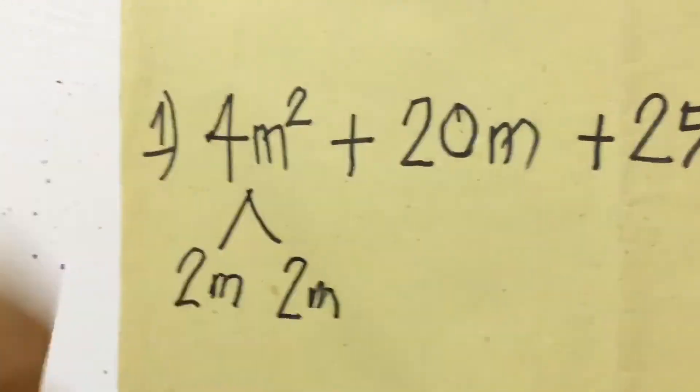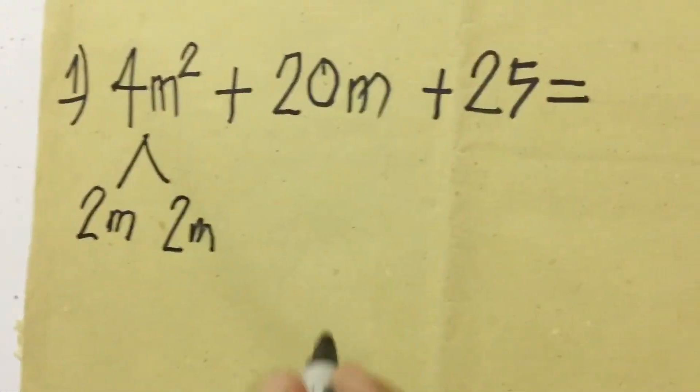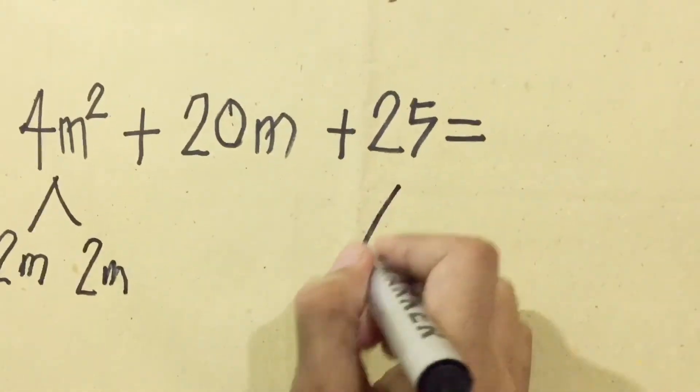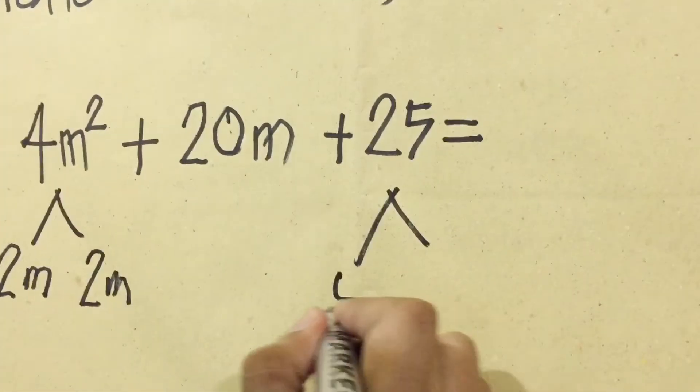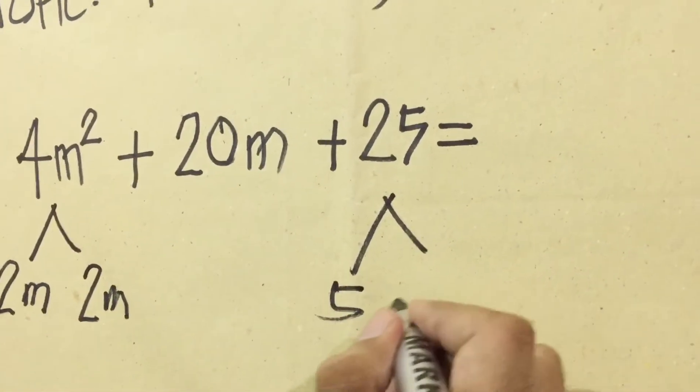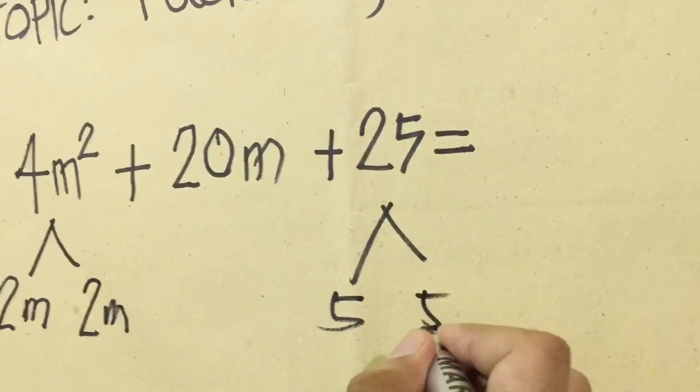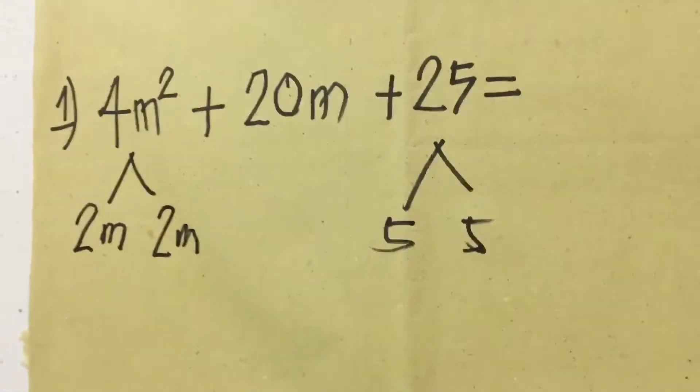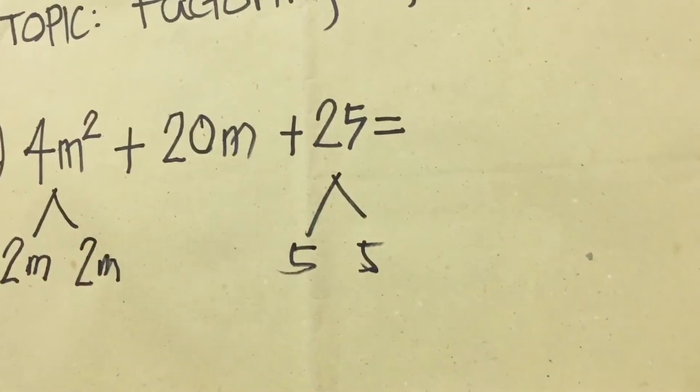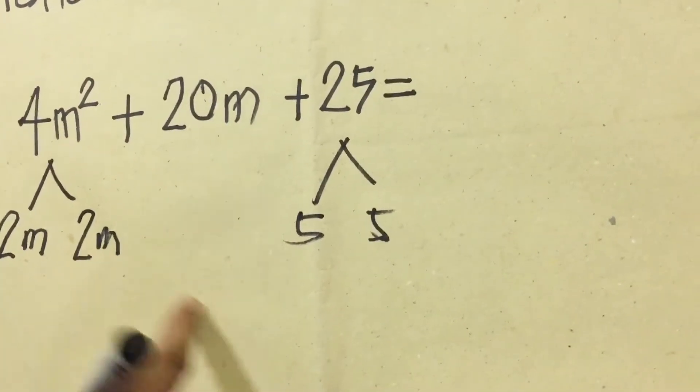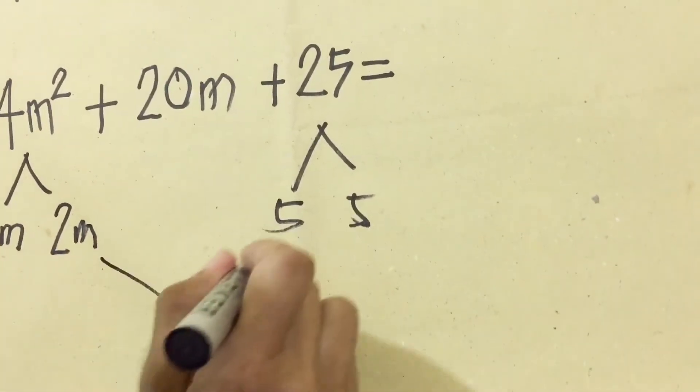What is the square root of 25? The answer is 5, and the factor now is 5 times 5 equals 25. Then to determine the middle, we're going to multiply these two numbers.